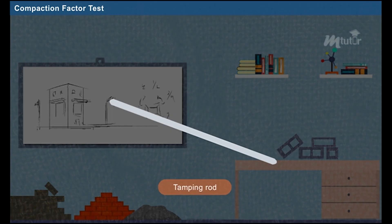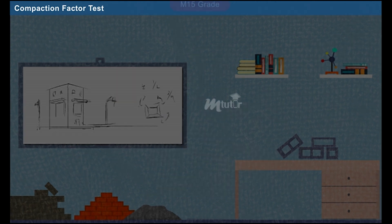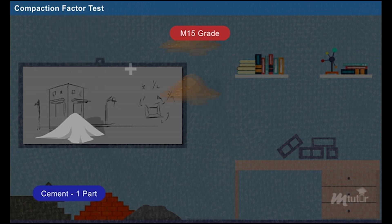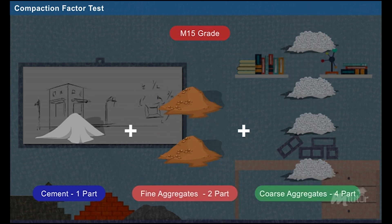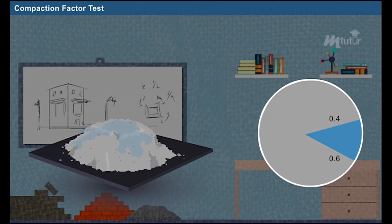Apart from that, a tamping rod of size 16 mm in diameter and 16 mm in length is used to compact the concrete. For example, let's take M15 grade concrete. Prepare the mix using one part of cement, two parts of fine aggregates and four parts of coarse aggregates. The water content is calculated based on the water cement ratio, generally varying from 0.4 to 0.6.